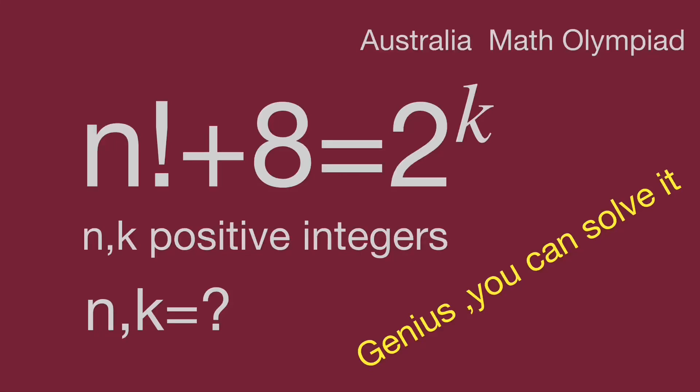Hello, you are watching Barahibo Math Genius Readers. Here's a question that comes from the Australia Math Olympiad. n factorial plus 8 equals 2 to the power of k, where n and k are positive integers. Find the values of n and k.